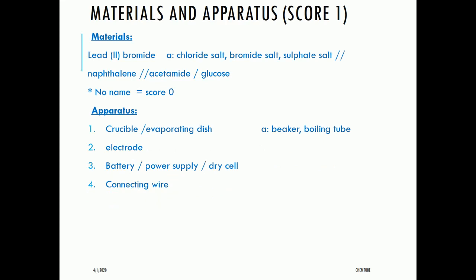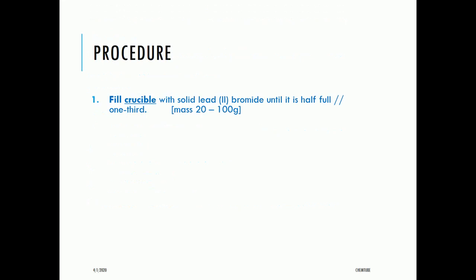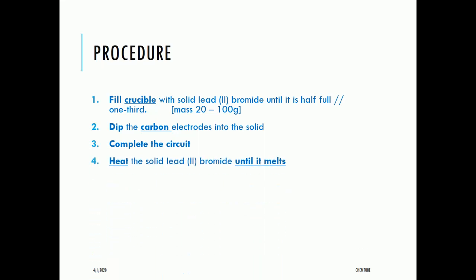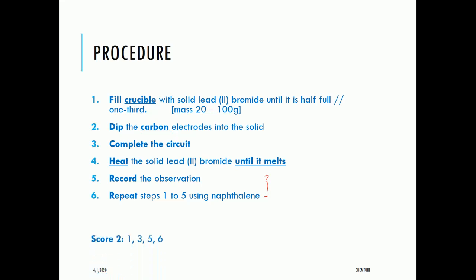For the procedure: step 1 — fill the crucible with solid lead bromide until it is half full or one-third full; step 2 — dip the carbon electrodes into the solid; step 3 — complete the circuit; step 4 — heat the solid lead bromide until it melts; step 5 — record the observation; step 6 — repeat steps 1 to 5 using naphthalene. Score 2 requires steps 1, 3, 5, and 6. Score 1 requires steps 1, 3, and 5 or any idea of electrical conductivity.